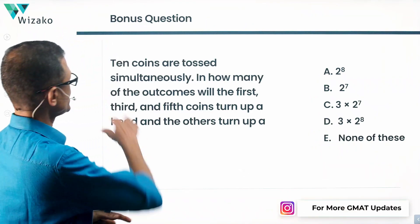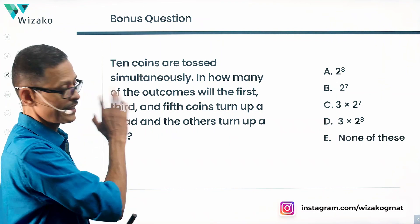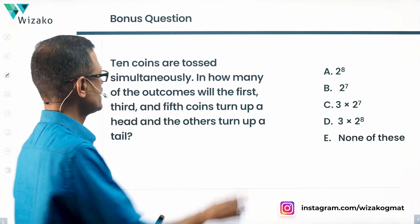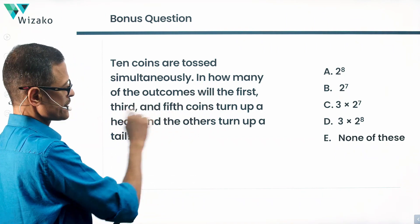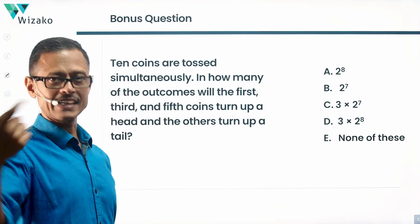If we look at the bonus question, 10 coins are tossed simultaneously. Okay, read this slowly. Stated a little more than what I stated there. In how many outcomes will the first, third, and fifth coins turn up a head? Right? Each of those should be a head.